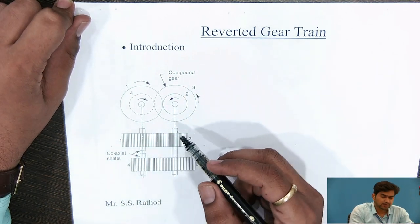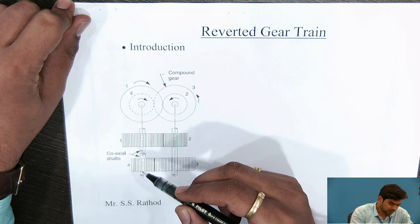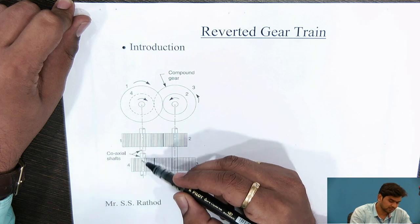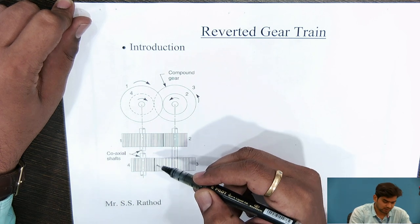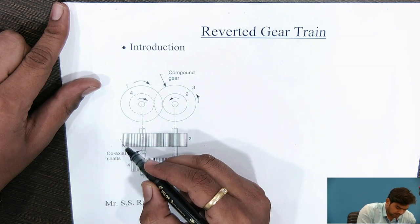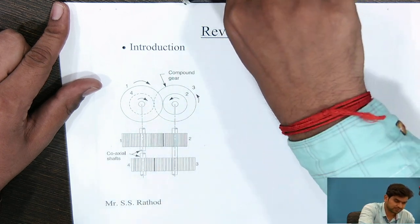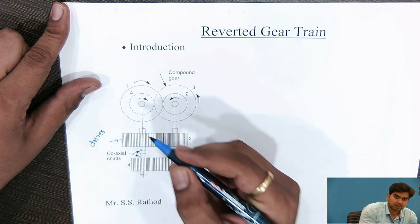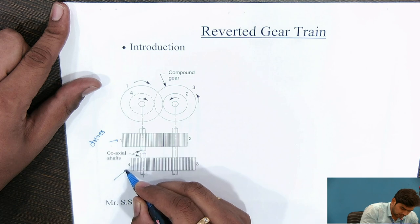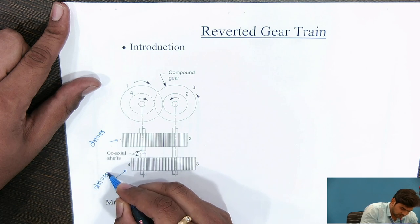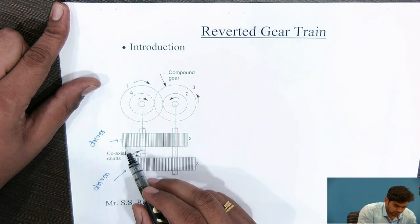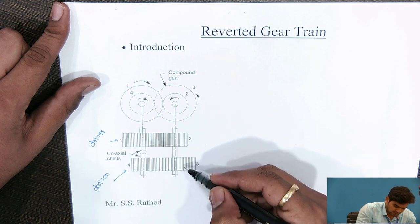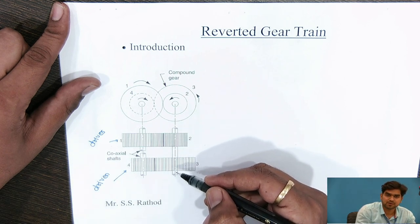In this diagram, a reverted gear train is nothing but when the input axis and the output axis of the shaft on which the gears are mounted are coaxial — then it is called a reverted gear train. It is also a kind of compound gear train.